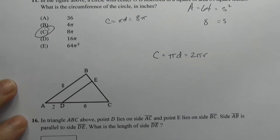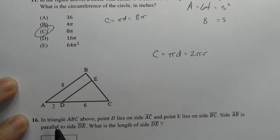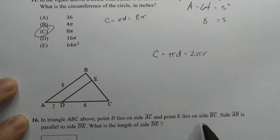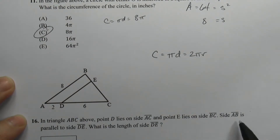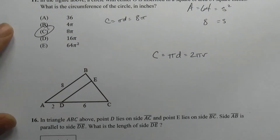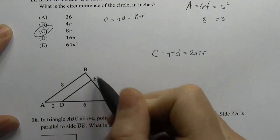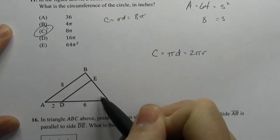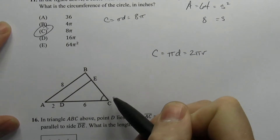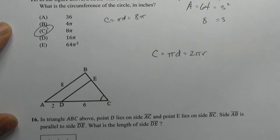Again, focus on points that the shapes share as opposed to introducing new points. It's the same concept here — these two triangles are overlapping each other. In triangle ABC, point D lies on side AC and point E lies on side BC. Side AB is parallel to side DE, and we want to find the length of side DE. Focus on what they share: the big triangle and the small triangle share this angle.